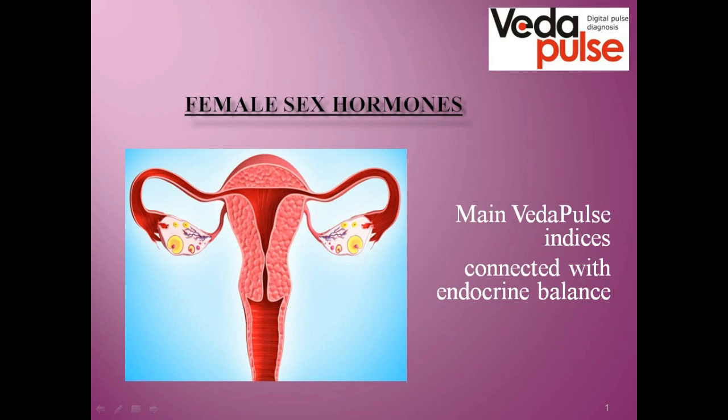Hello dear listeners. Pulse company welcomes you, and today I am translating on behalf of our Dr. Yelena Archibasova. We continue talking about the basics of human physiology in our seminars about female sex hormones and main beta pulse indices connected with endocrine balance. According to Ayurveda, the ninth gland of internal secretion is either testicles in males or ovaries in females.